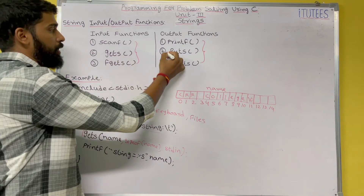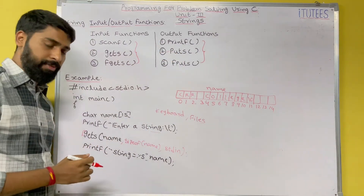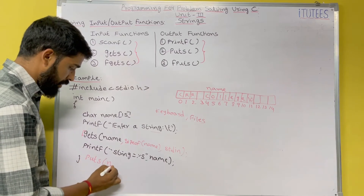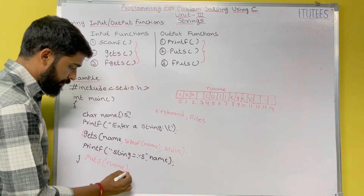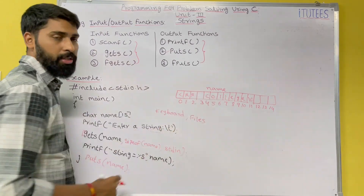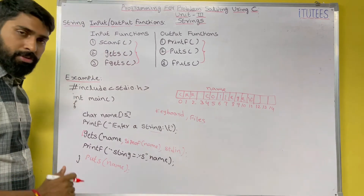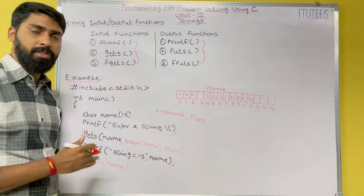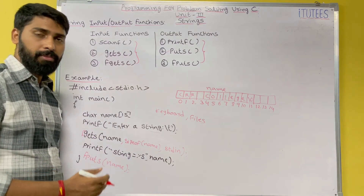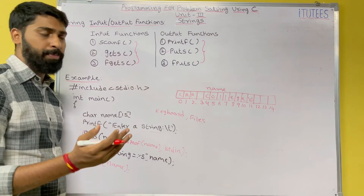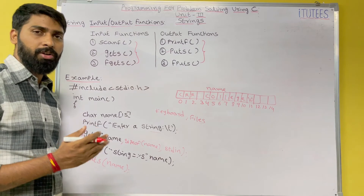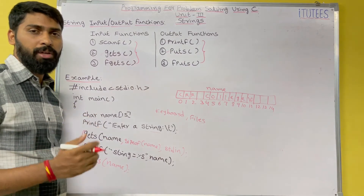Now we are going to see the puts function. Instead of printf, you use puts with the variable name — puts(name) — and it prints 'crr college'. Instead of puts, if you use fputs, fputs is used to write output to files as well. puts by default sends output to the monitor. With fputs, you can send output to files also.